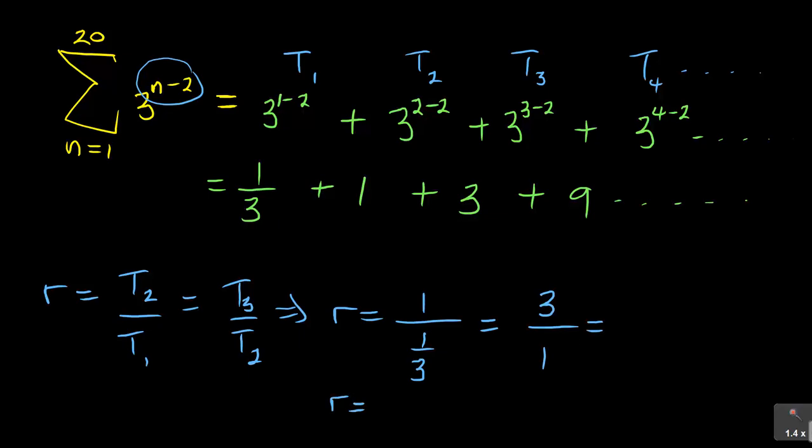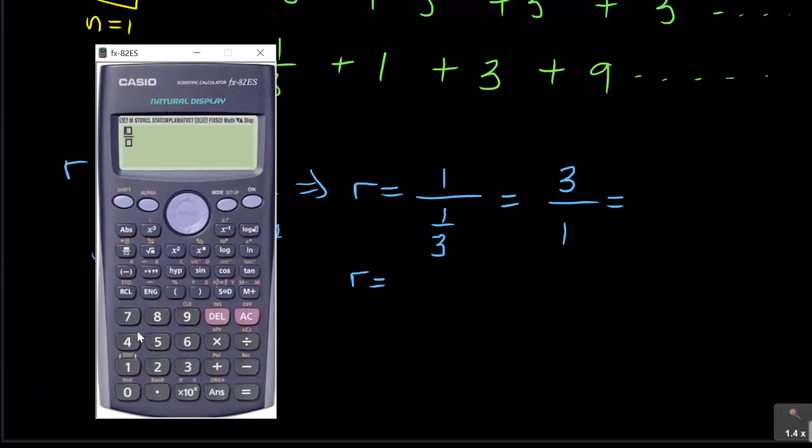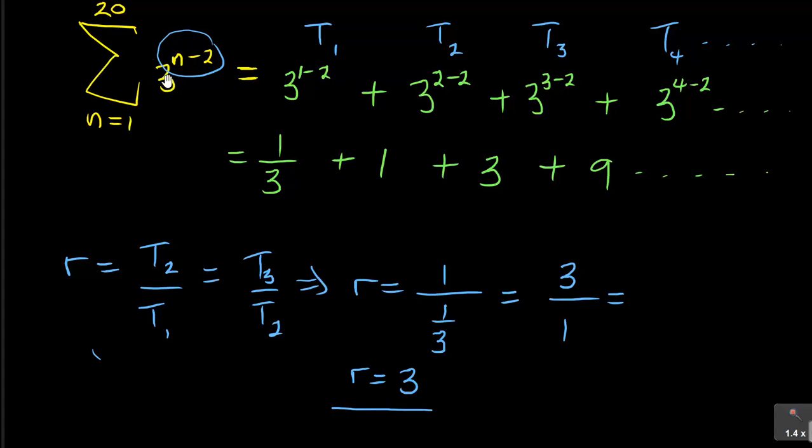R equals, now my T2 is 1 over my T1 which is 1 over 3, which equals T3 which is 3 over T2 which is 1. Let me test that. 1 over 1 over 3, if I use a calculator, I'm getting a 3, and 3 over 1 is a 3. So the common ratio meets the condition of a geometric series. This R equals 3.